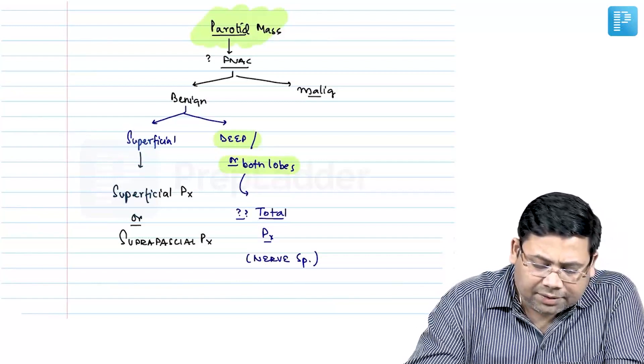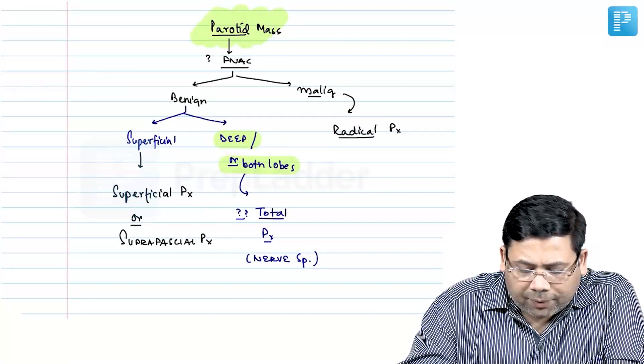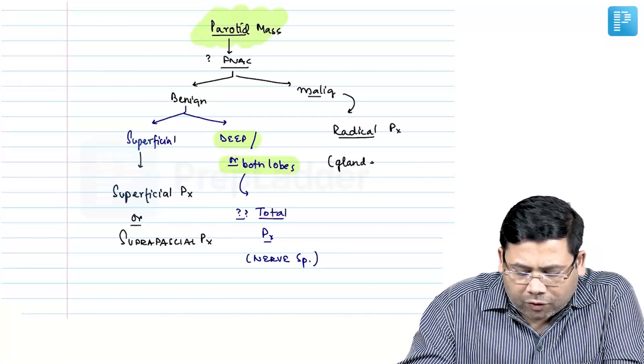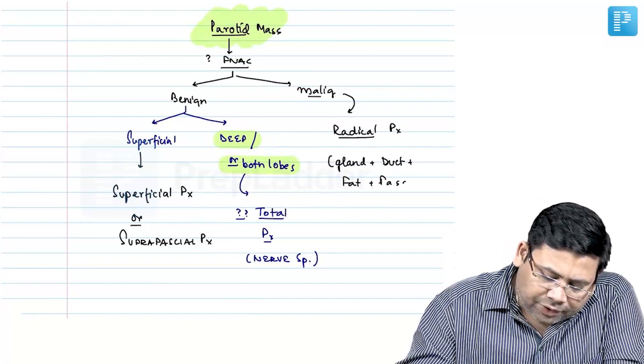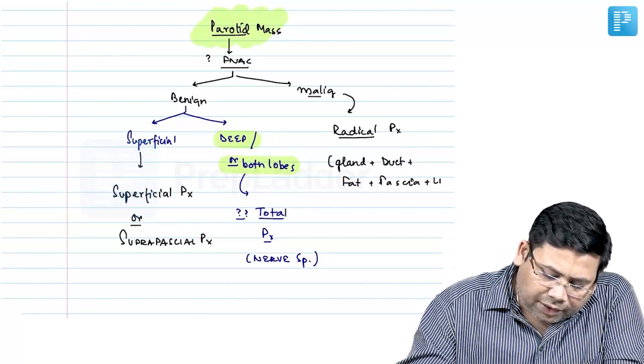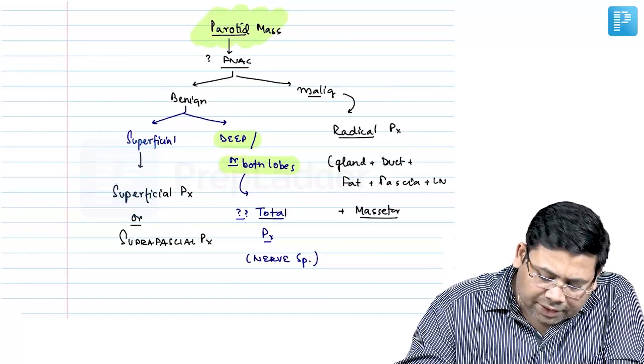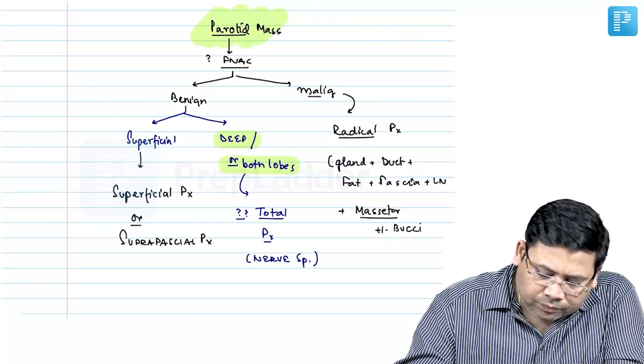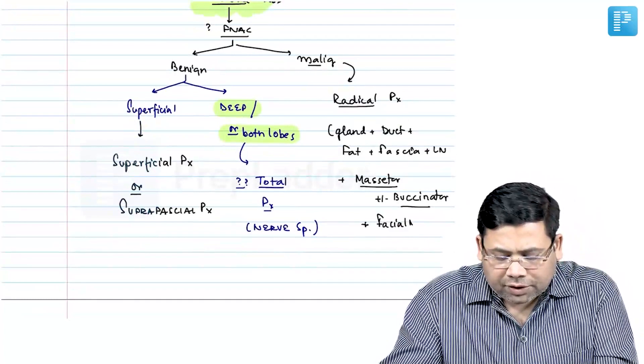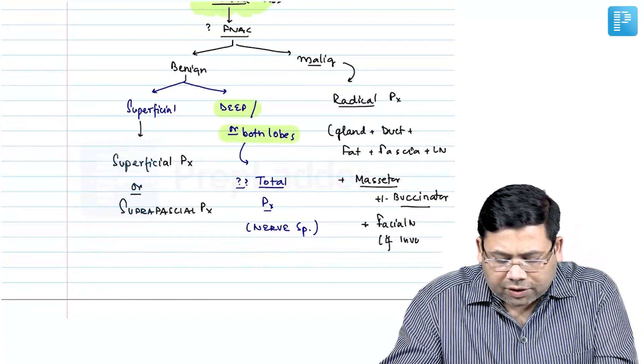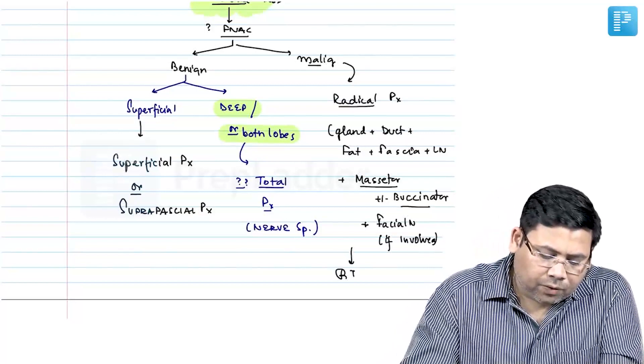If you deal with a malignancy, the answer is radical parotidectomy. When we talk about radical parotidectomy, we are going to remove the gland along with the duct, the fat, parotico-masseteric fascia, lymph nodes, and the muscle masseter compulsorily, plus or minus buccinator. If you see invasion into buccinator, along with facial nerve if involved. If the facial nerve is involved, you will have to remove this and all of them will be taken for radiotherapy.